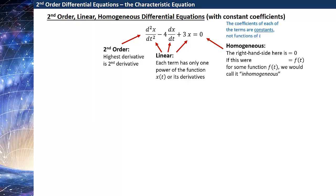And finally, constant coefficients means that the coefficients of each of these terms are just constant numbers and are not functions of t. There could, in principle, be a constant in front of the second derivative as well, but you can always divide that out so that the coefficient of the second derivative is always one. And that's kind of our standard form.